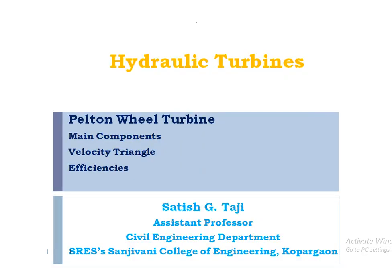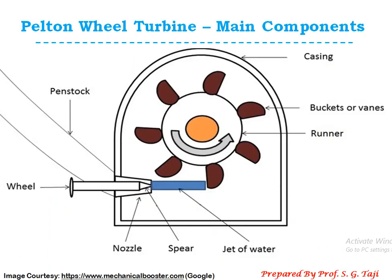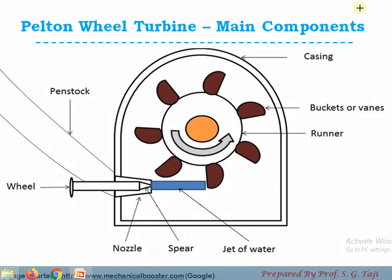Hello everyone, hope you all are doing well and taking care of yourself as well as your family. In this video lecture we are going to discuss about the Pelton wheel turbine. The discussion includes main components of Pelton wheel turbines, drawing velocity triangles at inlet and at outlet, deriving the equation for the work done per second by the jet of water on the Pelton wheel buckets, and various efficiencies.